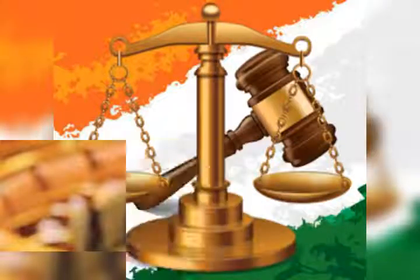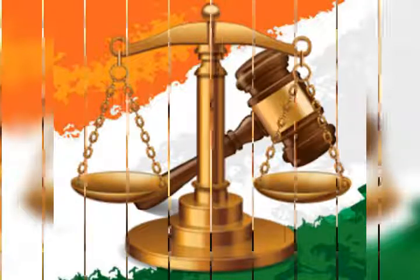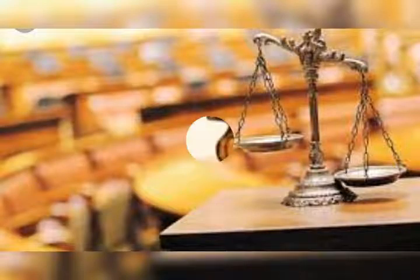Section 32 — Words referring to acts including illegal omissions: In every part of this code, except where a contrary intention appears from the context, words which refer to acts extend also to illegal omissions. Section 33 — Act, Omission: The word 'act' denotes as well a series of acts as a single act. The word 'omission' denotes as well a series of omissions as a single omission.